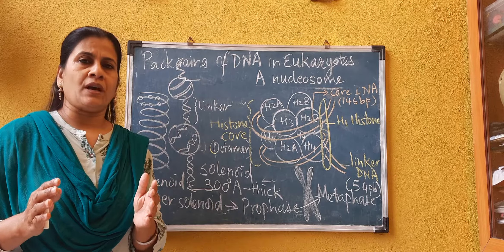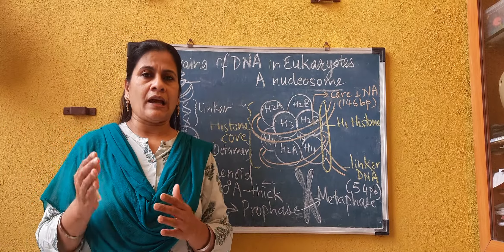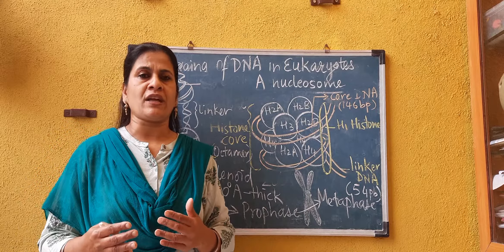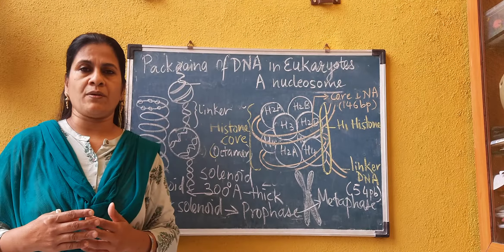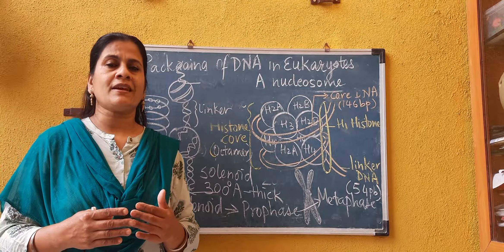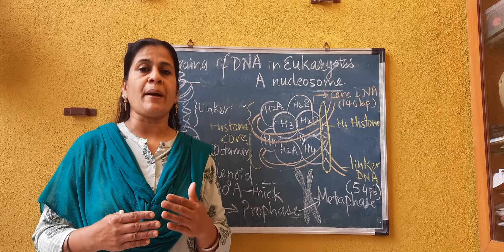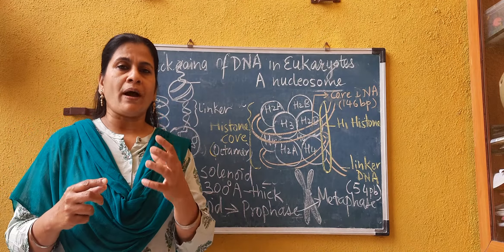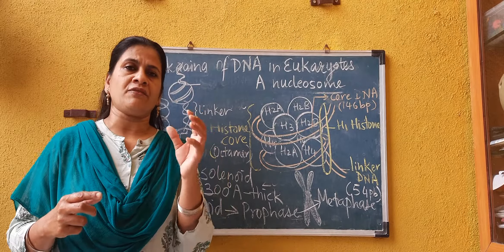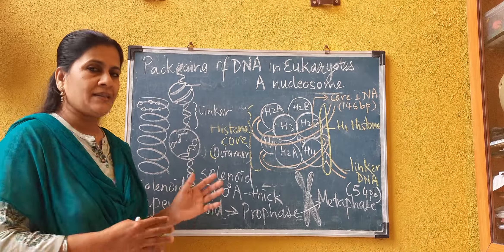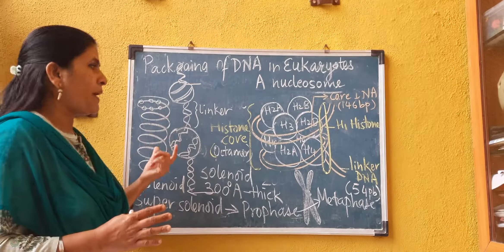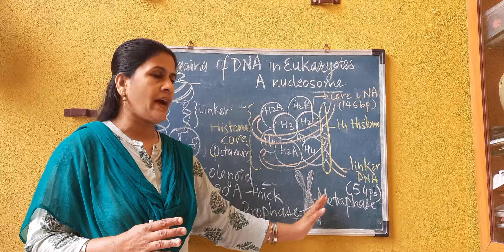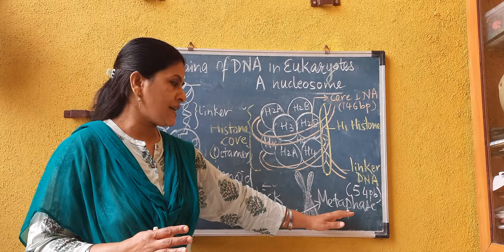As we all know, the cell undergoes cell division like mitosis and meiosis. Mitosis takes place at the time of growth and development as well as wear and tear of the body, while meiosis is required at the time of gamete formation. At both these stages of cell division, the chromatin material undergoes condensation and forms a chromosome. In today's lecture, we are going to see how the chromatin material gets condensed to form a thick chromosome at the stage of metaphase.